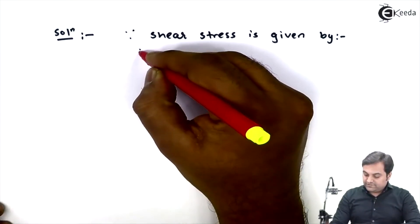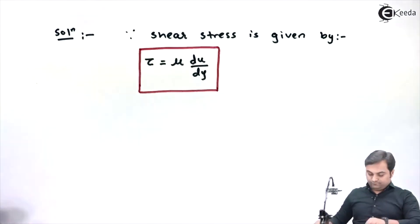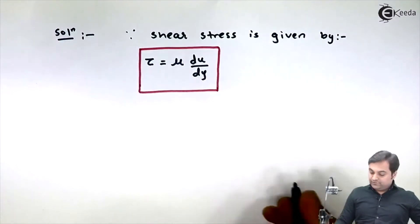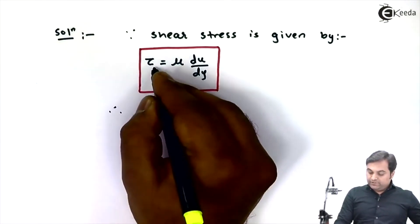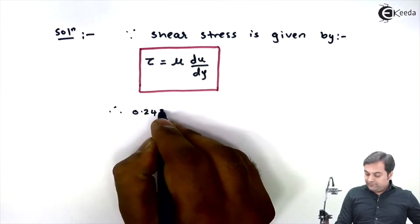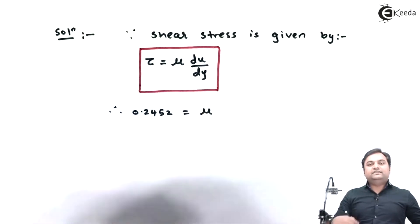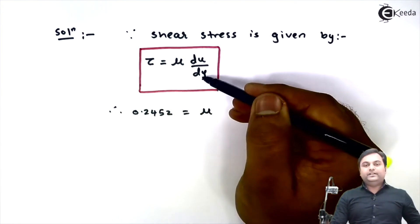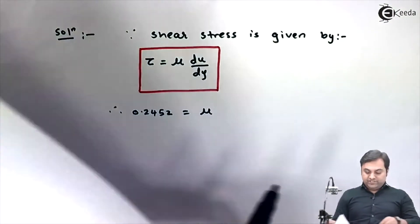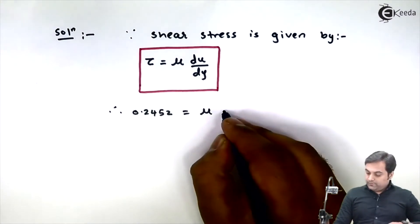Next, here I'll go on putting the values. Therefore shear stress is given in the question, it is 0.2452 equals mu. Du by dy is given directly because this term du by dy is called velocity gradient and the value in the question is 0.2 per second, so it is into 0.2.